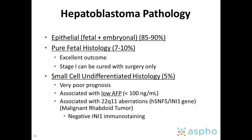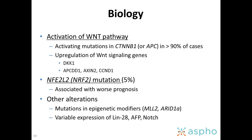Small-cell undifferentiated histology involves mutations in the SNF5 gene, meaning that on immunohistochemistry there is loss of INI1. The biology of hepatoblastoma is basically defined by activation of the WNT pathway. You will find activating mutations in beta-catenin or APC in greater than 90% of cases. Around 5% of cases have NFE2L2 mutations, which is associated with a worse prognosis.